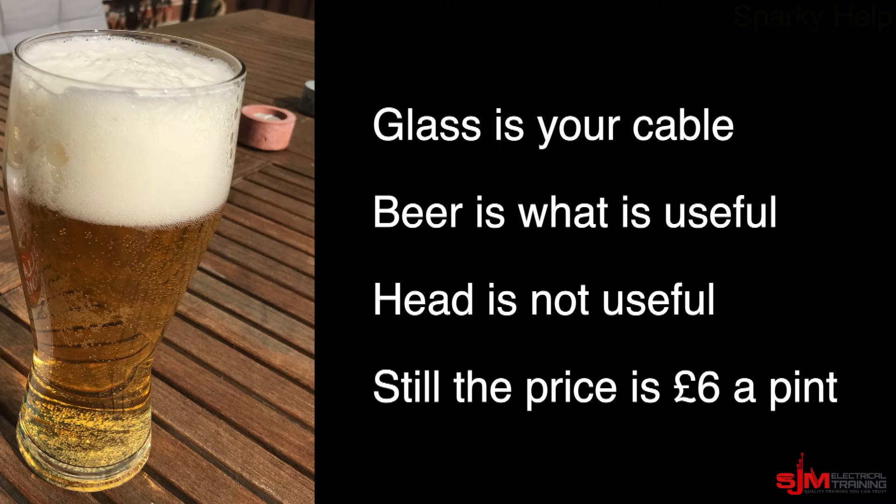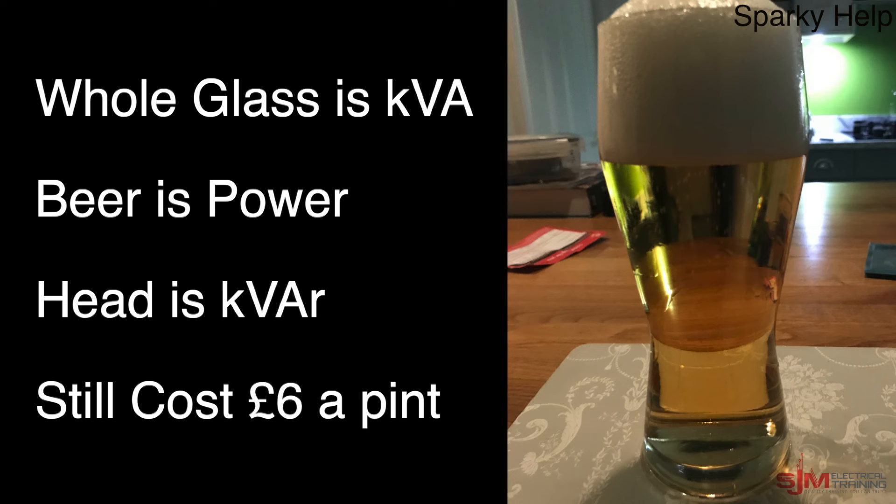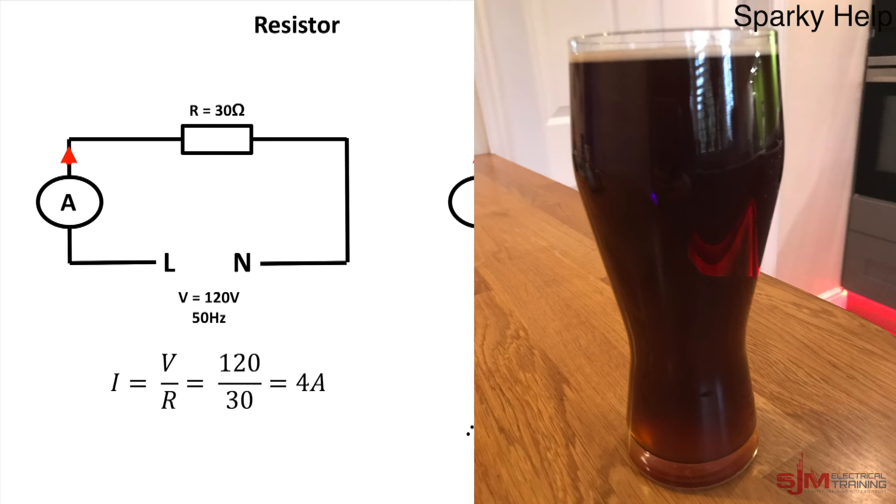So what about the beer? I hear you ask. Well let's take a pint. Here's a pint. And if we take the glass to be your cable. That how big it needs to be to carry the beer. And you can see the useful beer. The head. And still it costs the same. Let's look at it as a power analogy. The whole glass is the KVA. The beer is the power that actually does anything. But it still costs £6 to buy the pint. So there you go.